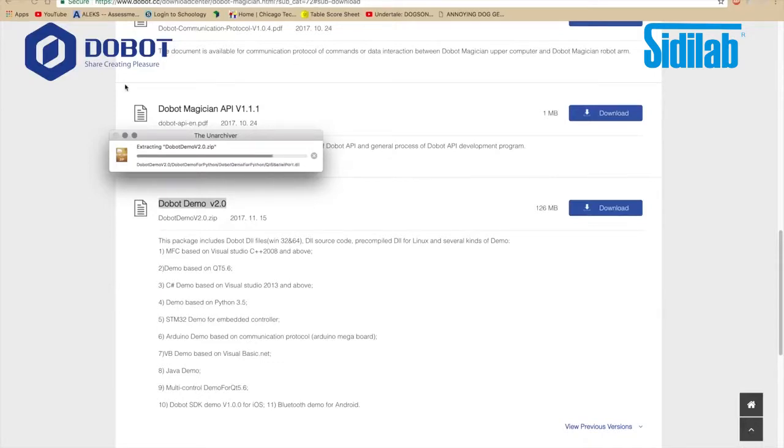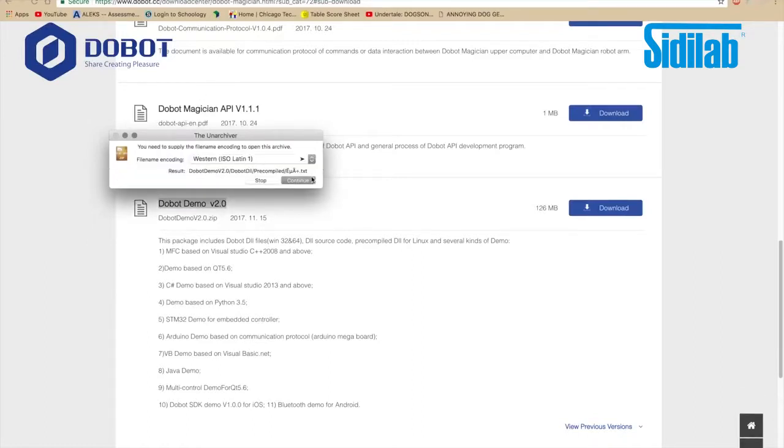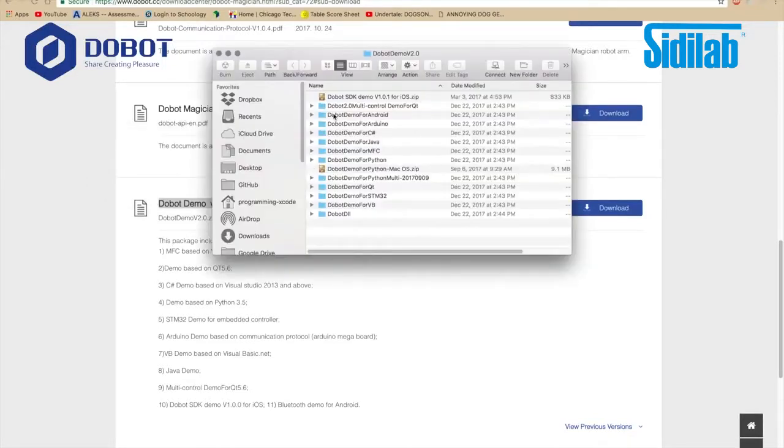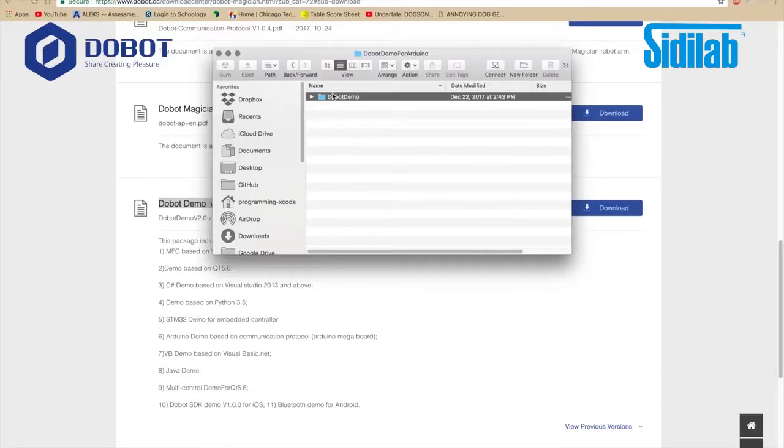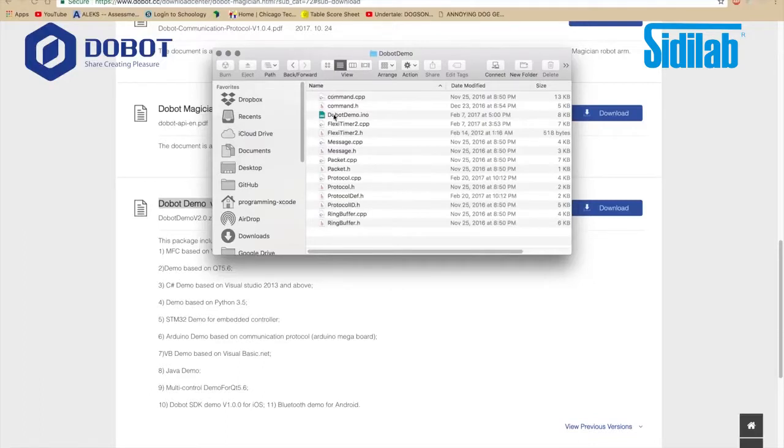Alright. It's almost done. Great. Now, I've extracted it. Now, we have to open up the Dubot Demo for Arduino. Open up that folder. Go to Dubot Demo, open it.